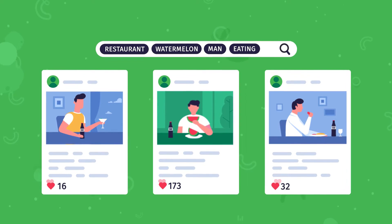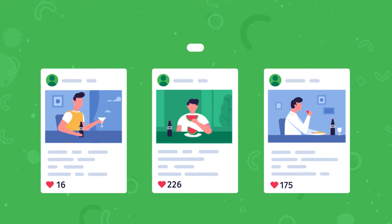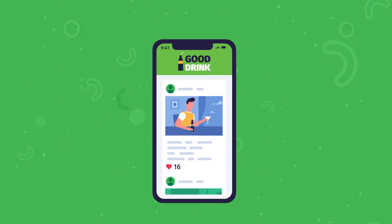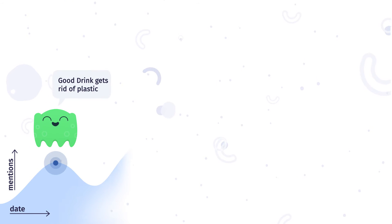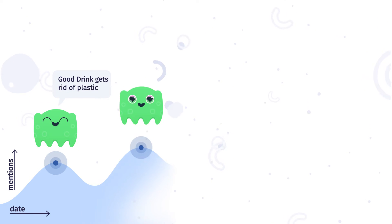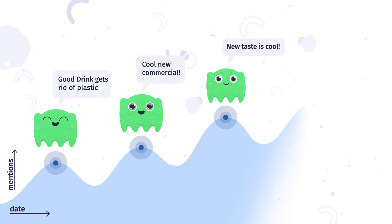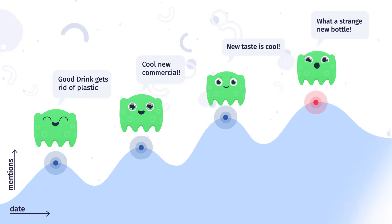Find nano-influencers of your brand and win the hearts of your customers with user-generated content. Uscan's AI-powered personal assistant, Aina, will keep you informed about trending discussions relevant to your brand and define their context.